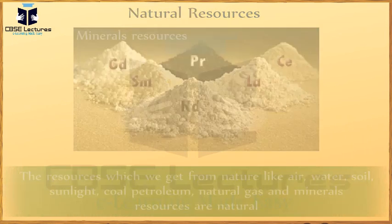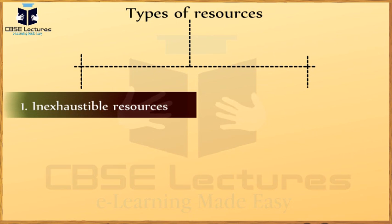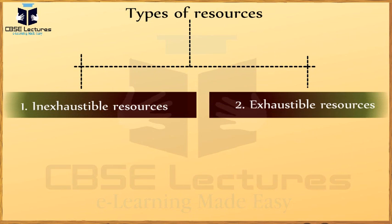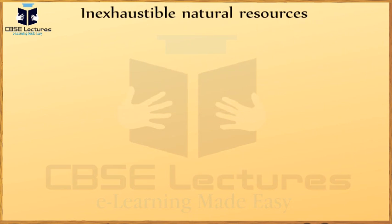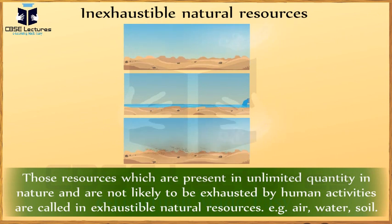Types of resources: Inexhaustible resources and Exhaustible resources. Inexhaustible natural resources are those resources which are present in unlimited quantity in nature and are not likely to be exhausted by human activities. They are called inexhaustible natural resources.